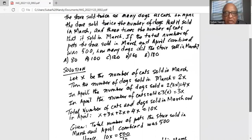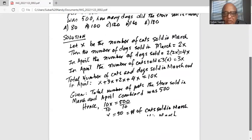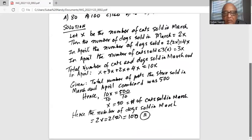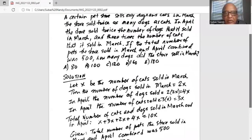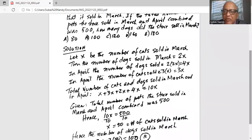And now the question asks how many dogs did the store sell in March, it is 2 times 50 which is 100. Hence option B which is 100 is the correct answer.